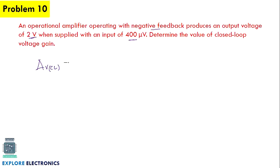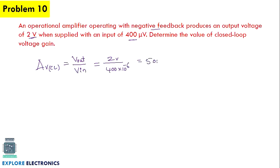The closed loop voltage gain is Vout divided by Vin. Since they have given negative feedback but no other values, we directly substitute: 2 volts divided by 400 microvolts (which is 400×10⁻⁶). This gives a gain of 5000.